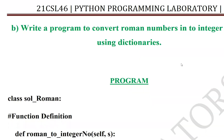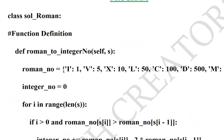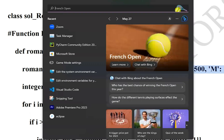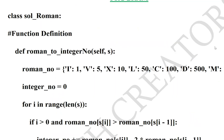Hey guys, welcome to Search Creator YouTube channel. In this video we will learn to convert Roman numbers into integer values using dictionary in Python. Previously we learned insertion sort and merge sort programs. Now we will learn about converting Roman numbers into integer values using dictionary. Dictionary means a collection of keys and values. For example, I is the key and 1 is the value, V is the key and 5 is the value.